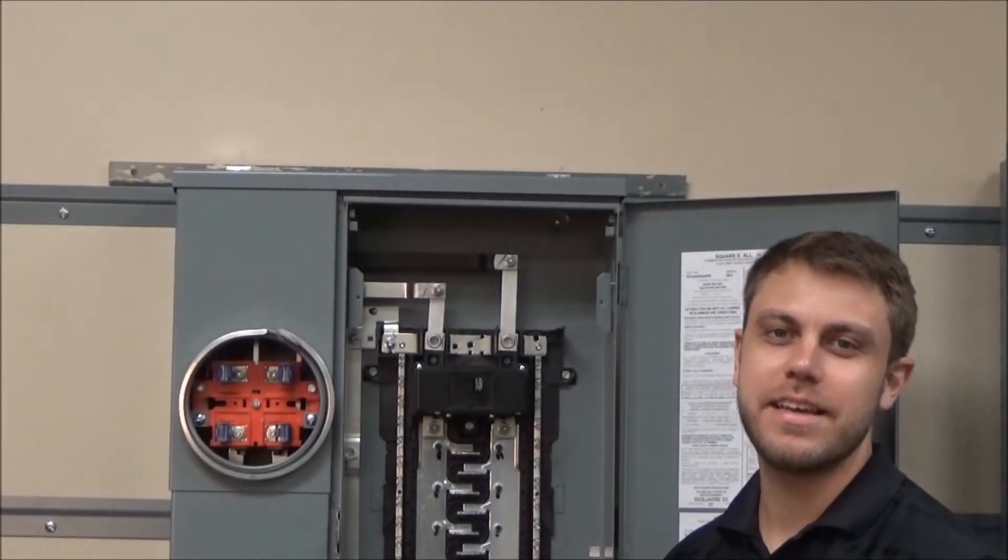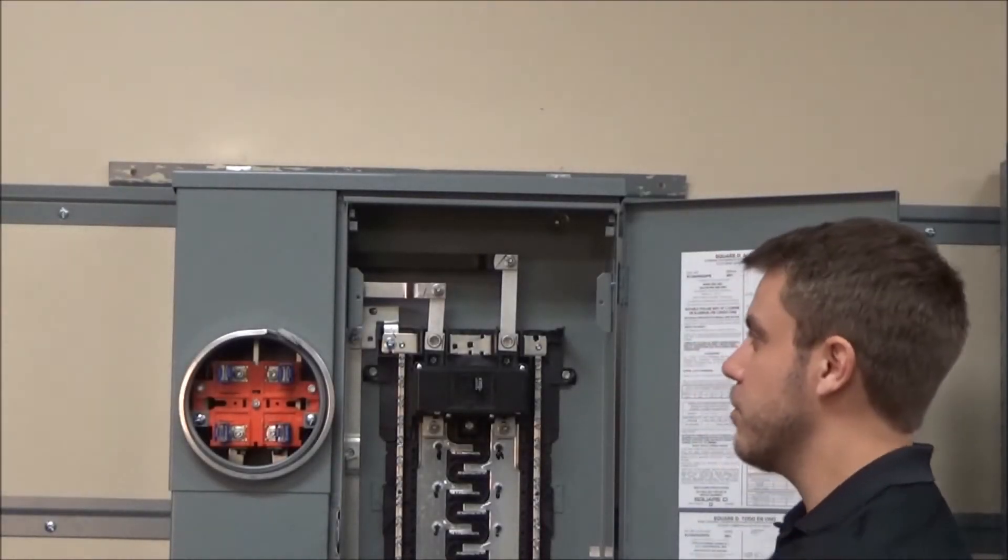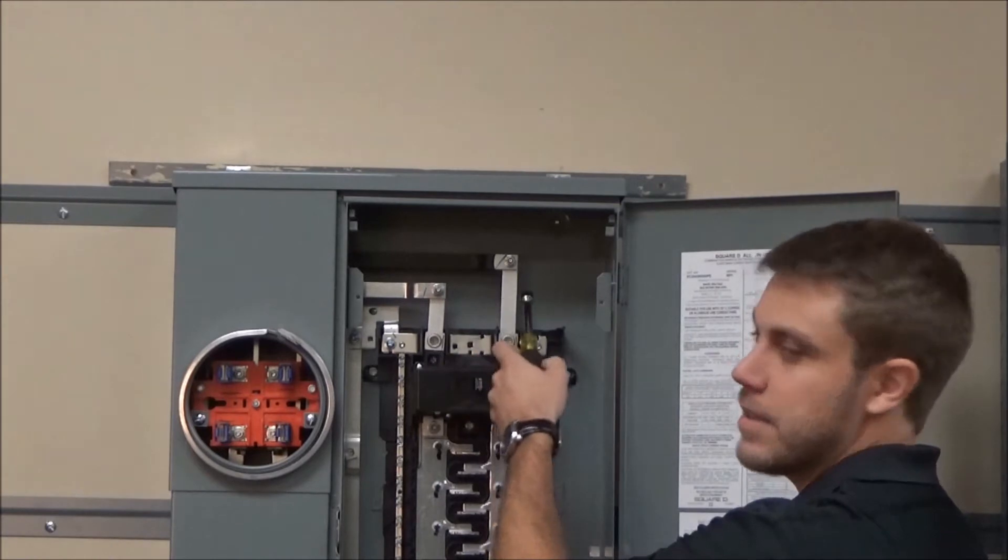With the line side insulating barrier removed, the next step is to remove the two cap nuts on the line side of the main breaker.